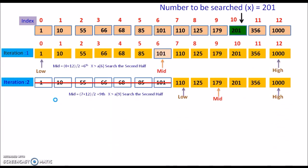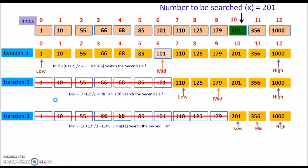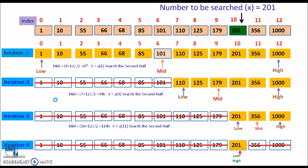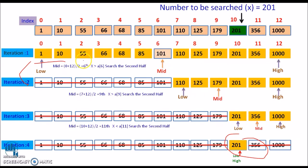The number to be searched is found at the mid location. We can now see this entire search in the given visual — how the search space is divided from the first iteration to the second to the third, until we find the element. The search space gets divided at each step.